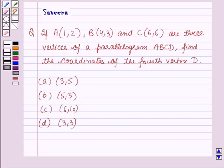Hello and welcome to the session. In this session we will discuss a question which says that if A(1,2), B(4,3), and C(6,6) are three vertices of a parallelogram ABCD, find the coordinates of the fourth vertex D.